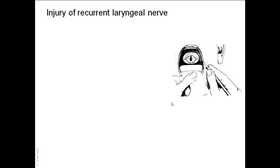The recurrent laryngeal nerve may be injured during operation, or compressed by an enlarged thyroid or tumor involving the thyroid gland. This will result in hoarseness of voice or stridor, depending on whether the injury is unilateral or bilateral. The recurrent laryngeal nerve supplies all intrinsic muscles of the larynx except the cricothyroid, and it is advisable that a surgeon examine the vocal cords prior to thyroidectomy so that any postoperative problem can be properly attributed.